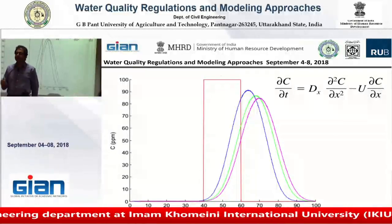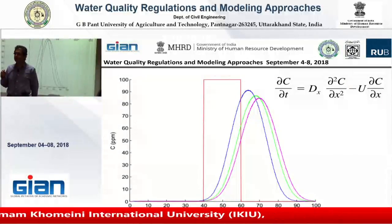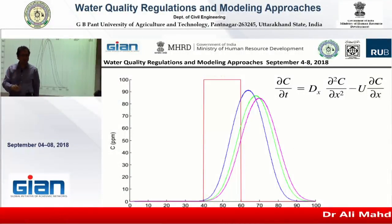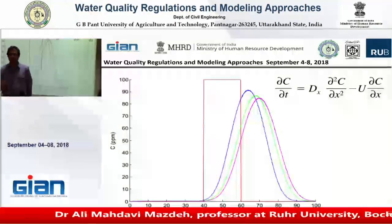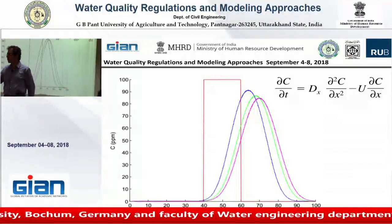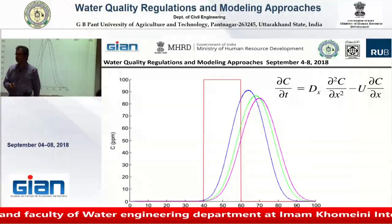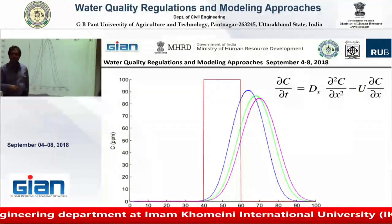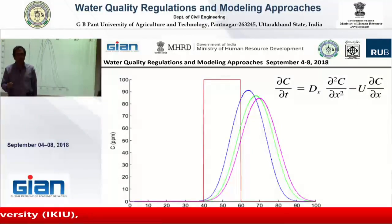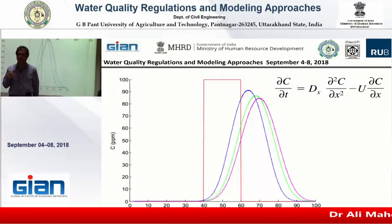This shows that when you are going to do solute transport modeling in any medium — whether it is groundwater or a river — you first need to know the velocity distribution. You should know how the velocity changes at different points, because we need u here. So before you start numerical modeling for solute transport, you must first do numerical modeling for flow transport — how flow is moving through the system.